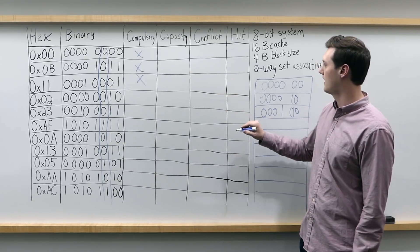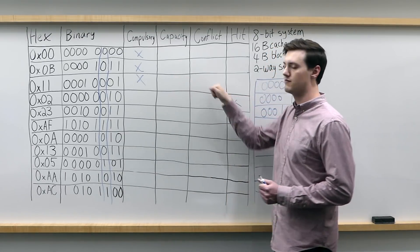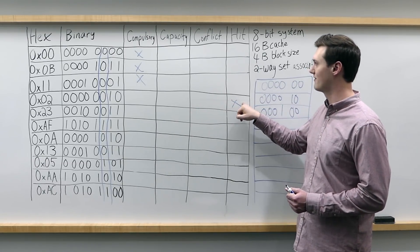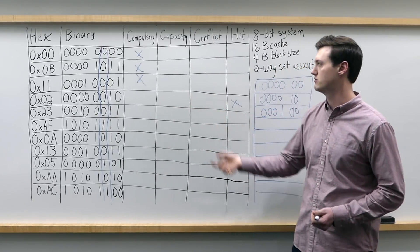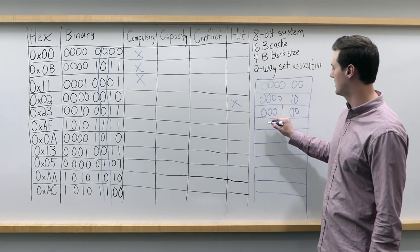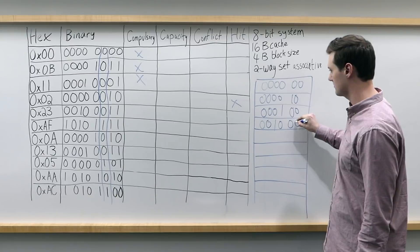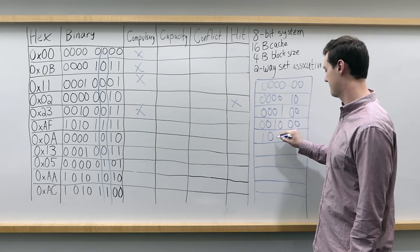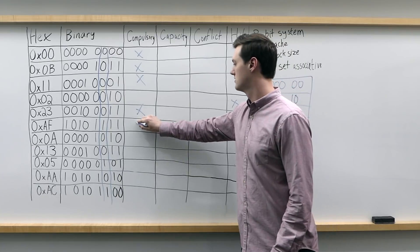We still need to perform the simulations for capacity and conflict, so we might need to reclassify that 0x02 access later. For 0x23, the tag is 001000 — not in the cache yet, so that's a compulsory miss. Same thing for 0xAF — tag 101011 is not in the cache yet, so that's also compulsory. For 0x0A, the tag four zeros then 1, 0 is right there as our second cache line, so we'd classify that as a hit for the time being. And for 0x13, three zeros then 1, 0, 0 is the third cache line, so also a hit for now.